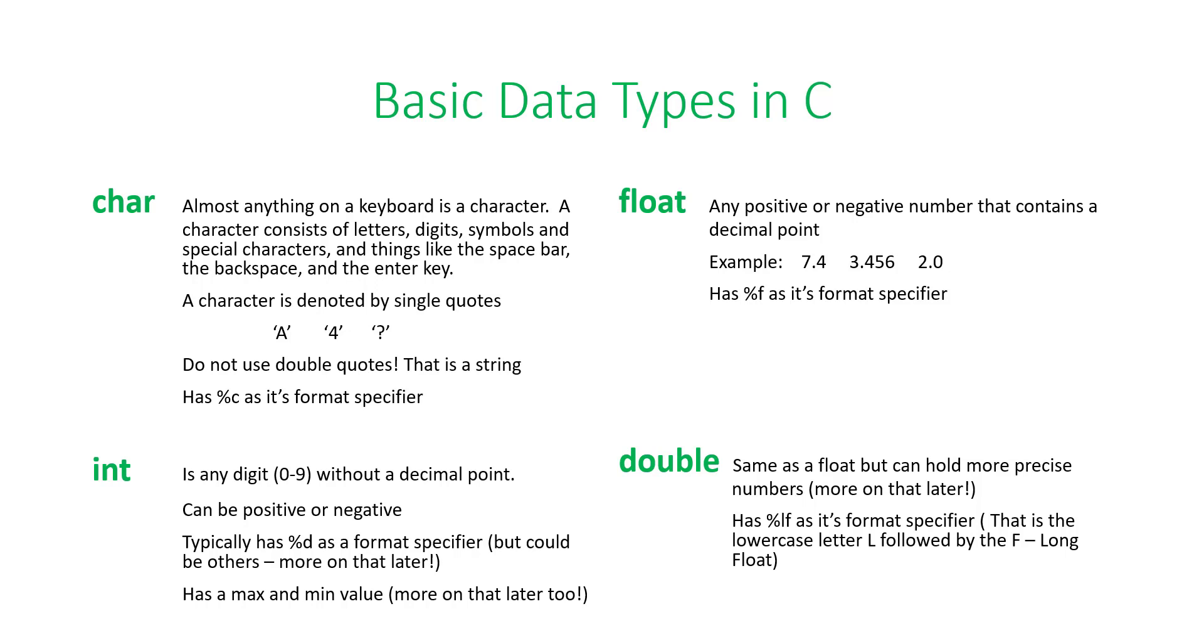So, you'll notice we have four basic data types. We have a character, char. We have an integer, int. We have a float and a double.